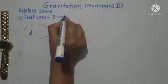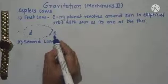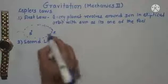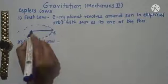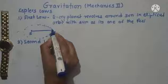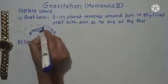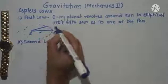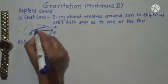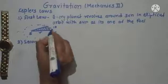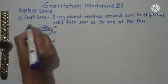The second law is related to the area swept by the radius vector. The radius vector is the vector drawn from the center of the Sun to the center of the Earth. Now, suppose in a time interval — say 10 minutes — the area swept by this radius vector is this region here.